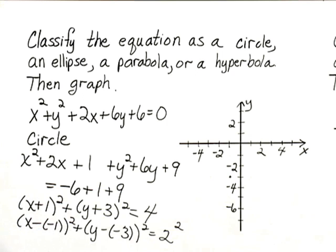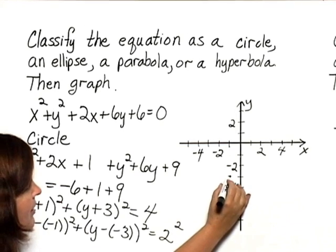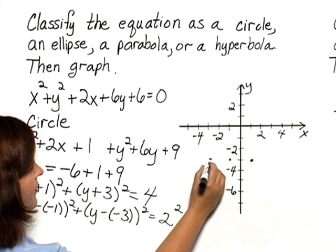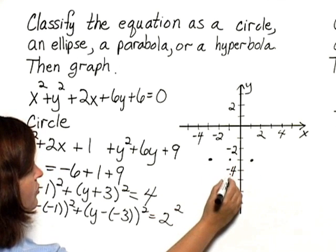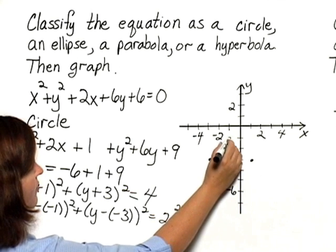If you have a compass, you can set it for 2 units and draw a circle. If you don't, like I don't here, we can count 2 units in some directions and mark some points on the circle and then sketch it. Let's go 2 units right of the center, 2 units left of the center, 2 units down from the center, and 2 units up from the center.